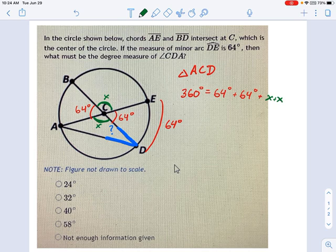So we can solve this. Pull out a calculator and say 360 minus 64 minus 64. That means 232 equals 2X, which, I'm going to be careful here and just let the calculator do it for me, 116 degrees equals X. That's helpful.